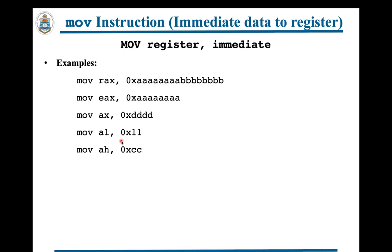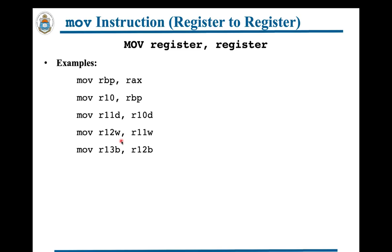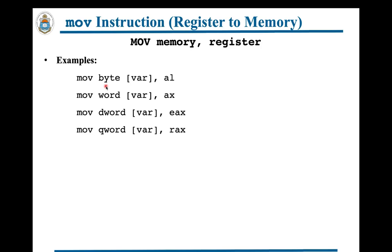This rule applies not only to the MOV instruction but to all instructions of the x86-64 architecture. A sample MOV instruction moving register contents to memory should note the size specifiers with the destination memory operand. When moving 8 bits to a memory address you use the specifier BYTE, and for a word, double word, or quad word you use WORD, DWORD, or QWORD respectively.